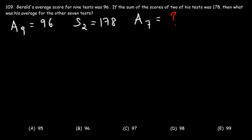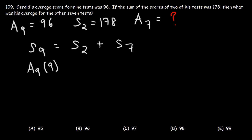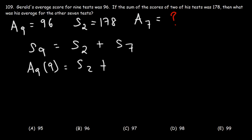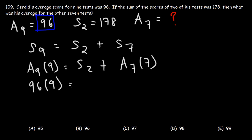The sum of all nine exams equals the sum of the first two exams plus the sum of the seven exams: s9 equals s2 plus s7. S9 can be written as a9 times 9. We already know s2, so we leave it as s2. S7 we write as a7 times 7. A9 is 96, so 96 times 9 is 864, and s2 is 178.